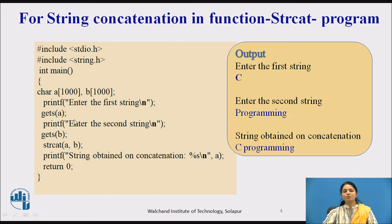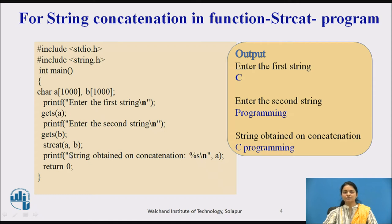Checking the output: the user is asked for the first string, they enter 'C'. For the second string, the user enters 'programming'. After running strcat on a and b, the output is 'C programming' — first the string a, then 'programming' the second string — and this result is found in string a, the first string.